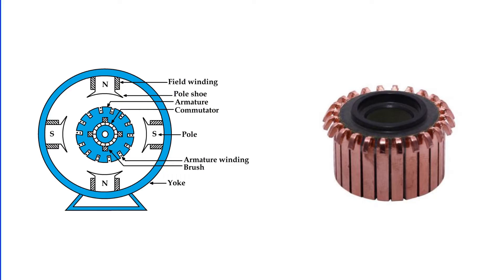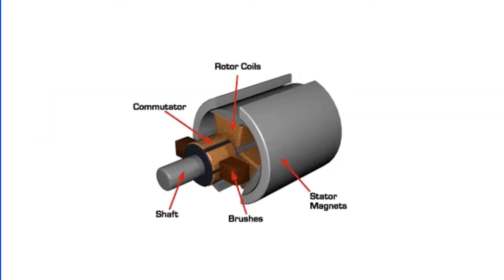The commutator then takes center stage, a mechanical marvel that transforms the alternating EMF from the armature winding into a steady direct voltage at the generator's terminals, effectively acting as a rectifier.